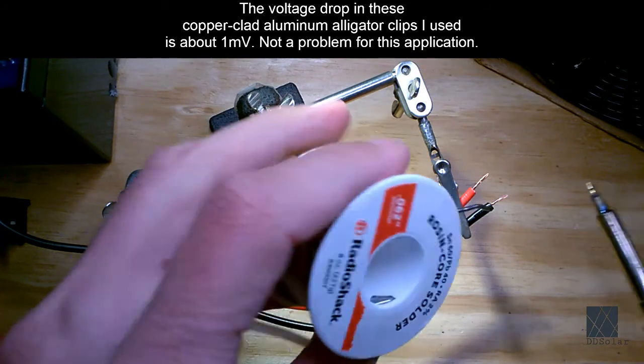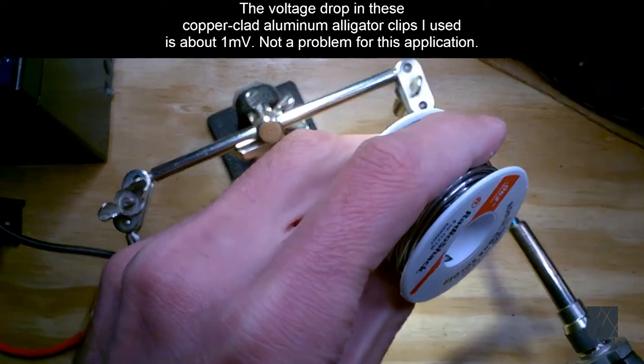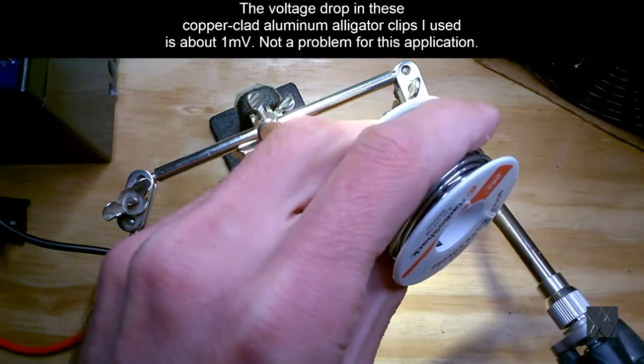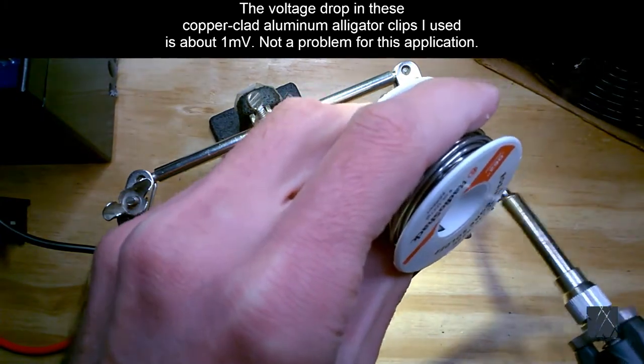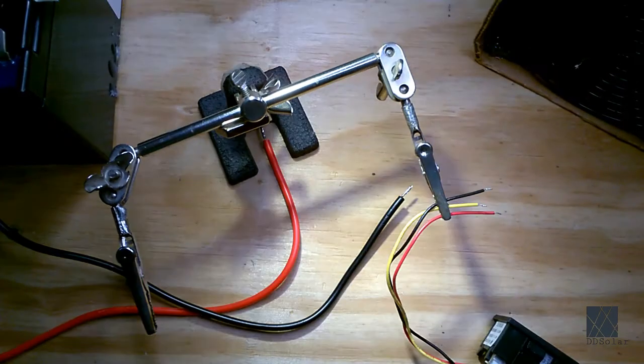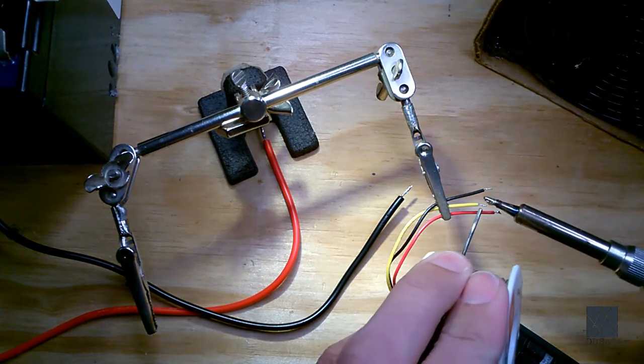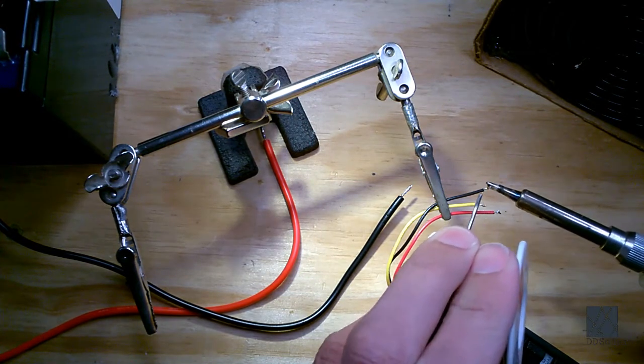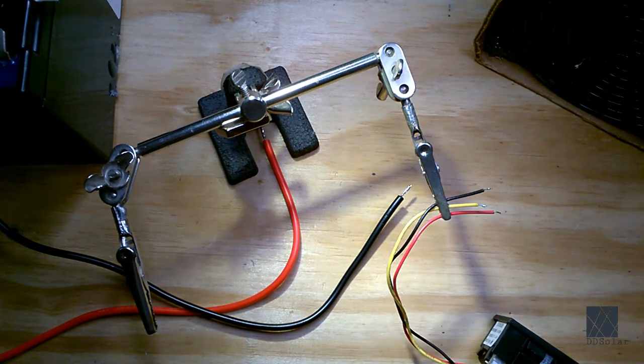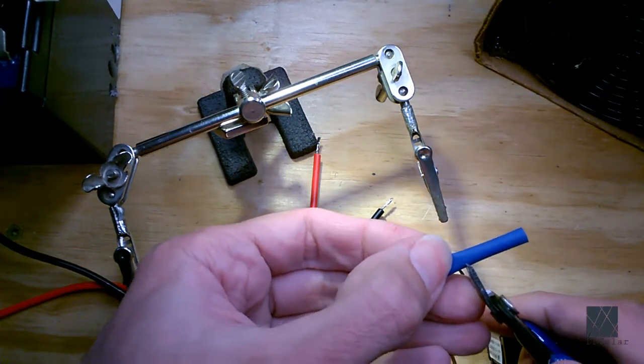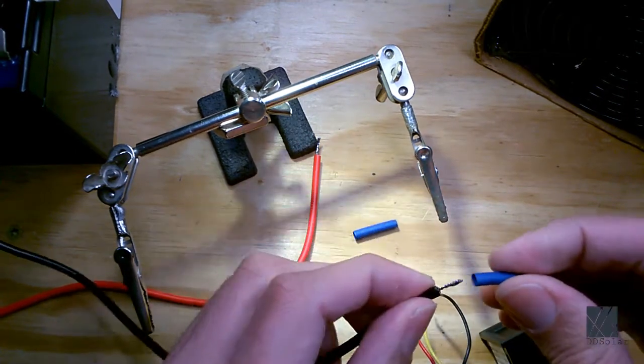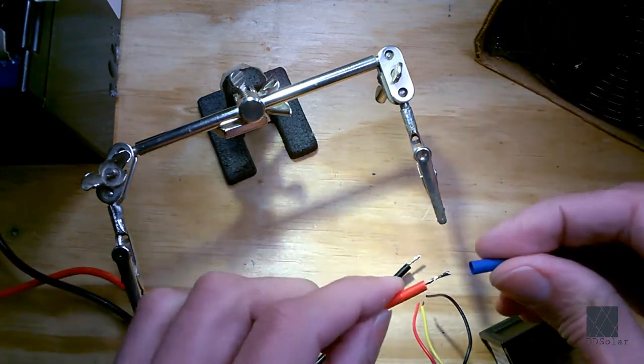Now I go ahead and put some wires on this voltmeter. I'm going to use these alligator clips that I cut off because this is the quickest way I have to get up and running. I just tin the wires.